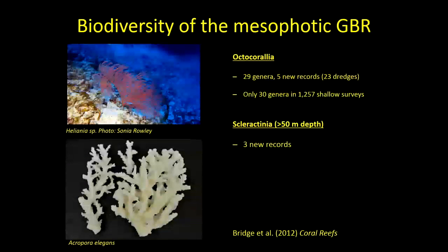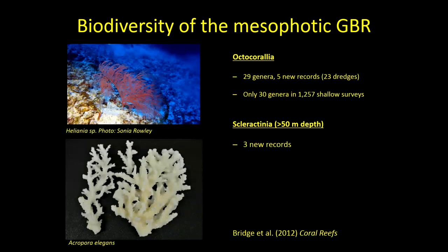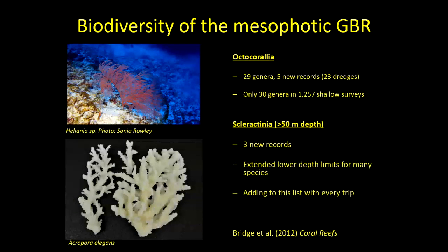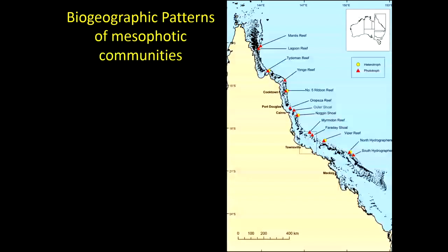For the Scleractinian hard corals, we found three new species records including Acropora elegans, another species that had only previously been recorded from the Coral Triangle. We extended the lower depth limits for many species. We're adding to the list of species recorded in the mesophotic zone pretty much every time we go down and have a look - not only species that are new records for the Great Barrier Reef or Queensland, but also species we thought only occurred in shallow water that we're now finding live much deeper than previously thought.